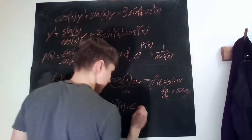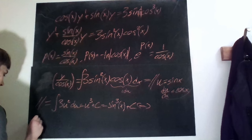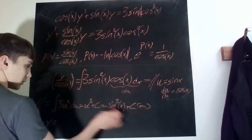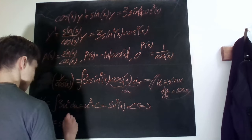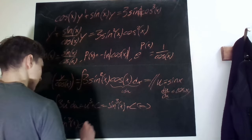And we obviously still have the divided by cosine there, so we then put that y equals, so we just multiply everything by cosine. So we have sine cubed of x times cosine